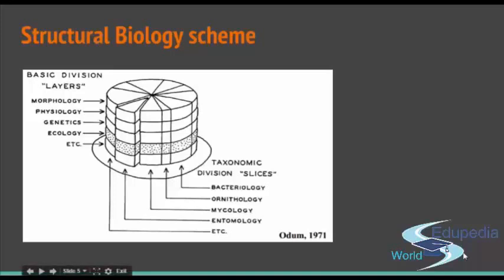Ecology is something more comparable to genetics in this scheme. Just as you have genetics of bacteria, genetics of birds, and genetics of bugs — which is entomology — you can have ecology of all these different types of organisms. But what is beautiful about ecology is that it takes a step further: it goes above the organism, above the species, higher and higher. As genetics goes down the level of organization of a specimen, ecology goes up.